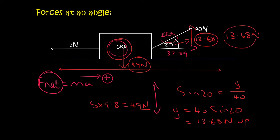But then Kevin why is the object not going through the floor? Because that's 49 and that's 13.68. That's not balanced. Aha that's where the normal force comes in guys.